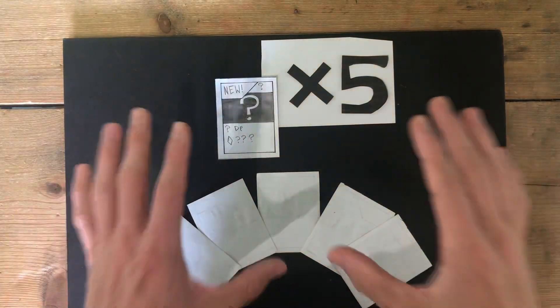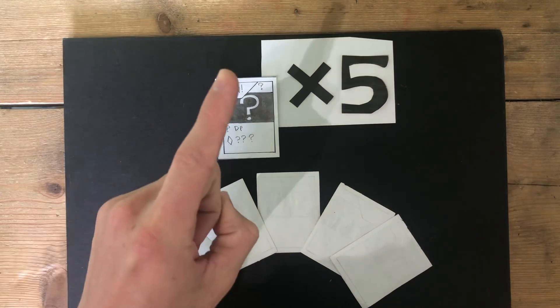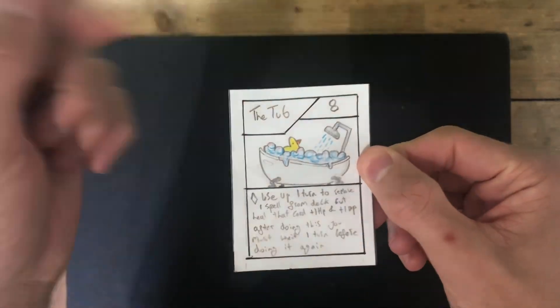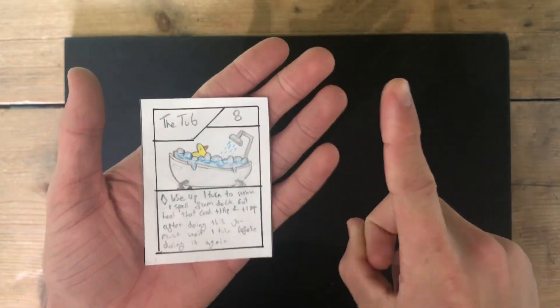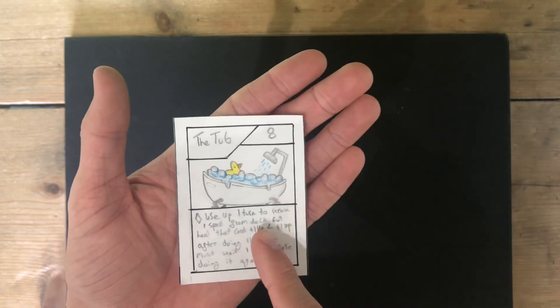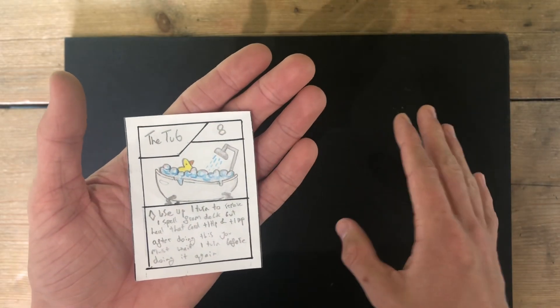Now, for the 5 new cards coming to Nog. But stay tuned, because there's a new mechanic at the end of this video that you are not going to want to miss. The first new card is the Tub, with 8 HP, and its ability that you can use 1 turn to remove any spell card on deck. But the card that it is removed from will gain 1 HP and 1 damage. And after doing this, you must wait 1 turn before doing it again.